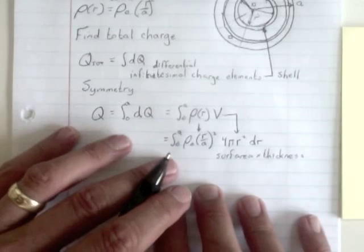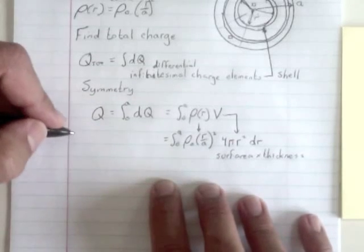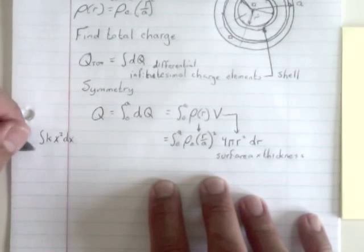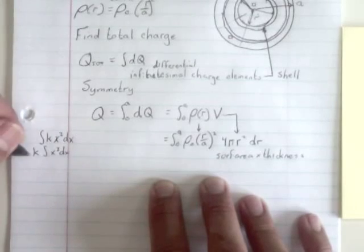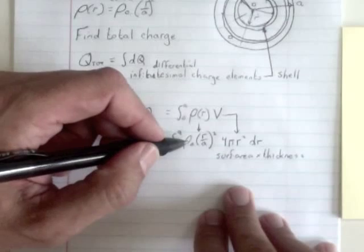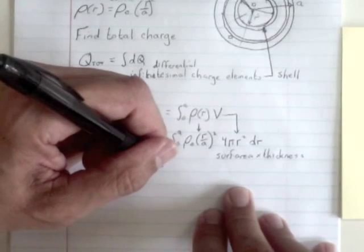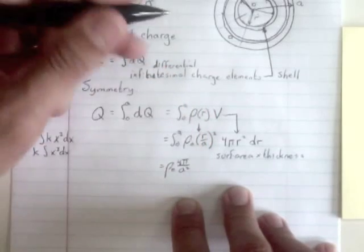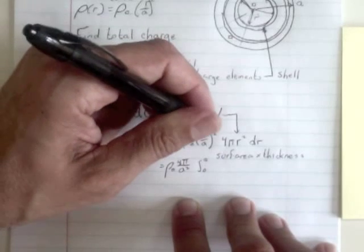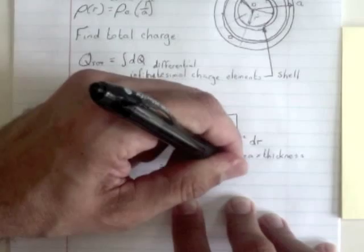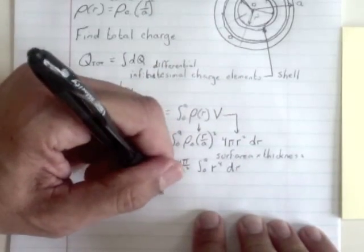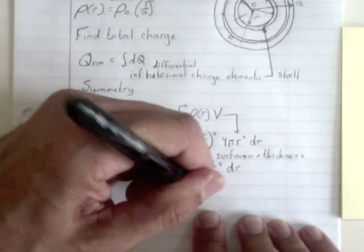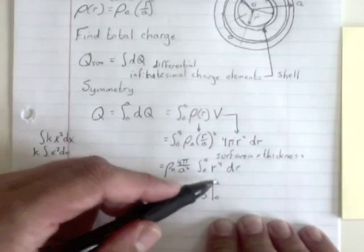Now we can start grouping things. For integration, the integral of a constant times x squared dx is just k times the integral of x squared dx. You can take the constant out front. So let's take all the things that don't depend on R. Rho naught, A, 4 and pi are constants. So we can write that as rho naught, 4 pi over A squared, times the integral from zero to A of R squared times R squared, that's R to the fourth dR. R to the fourth dR is easy to integrate. So we have rho naught, 4 pi over A squared, R to the fifth over 5, going from zero to A.